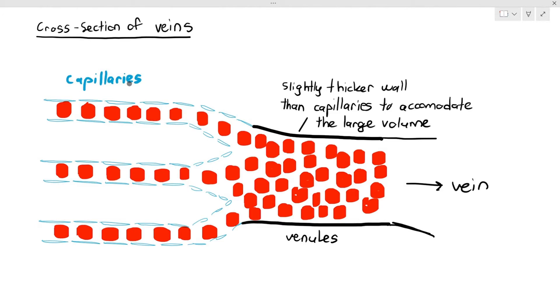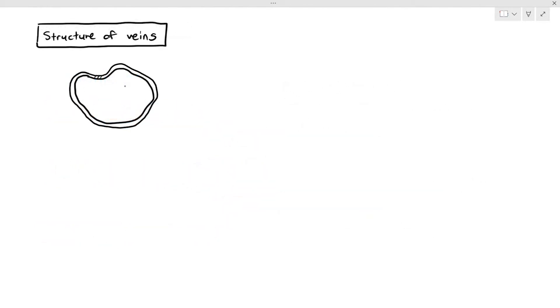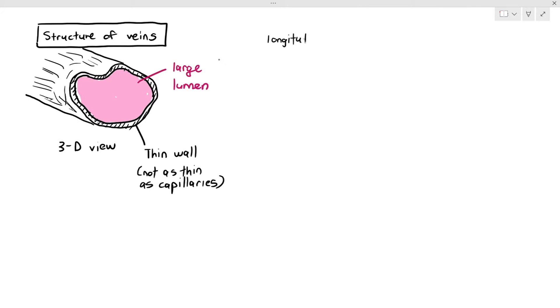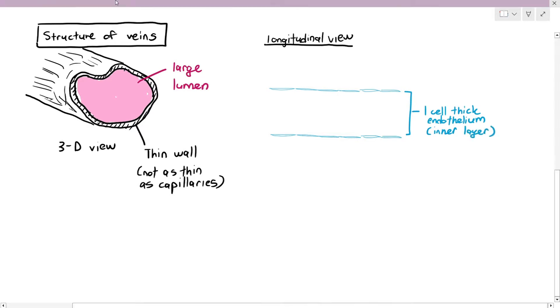And then from the venules, it drains into the vein. Now, in terms of vein structure, three-dimensional view, you can see that it has a thin wall, but the wall is not as thin as capillaries. And they also have a relatively large lumen. Now, notice when we are looking at the longitudinal view, the longitudinal view of the vein starts off with the innermost layer. And the innermost layer is made up of the one-cell thick endothelium. And it's the same thing as like in the artery. It's to minimize the friction of the blood flow. And I'm also labeling the large lumen like that.